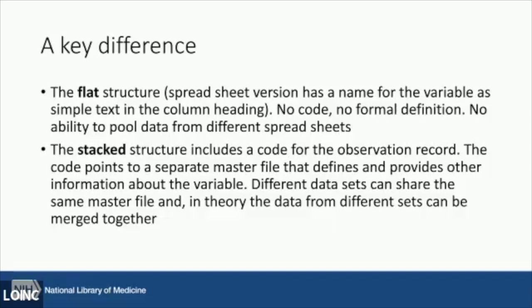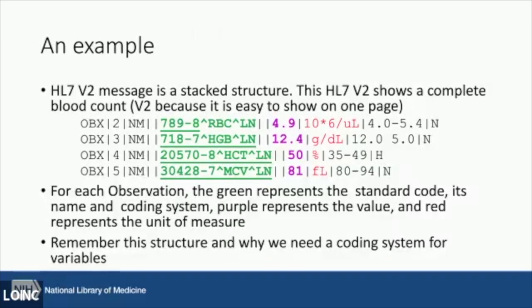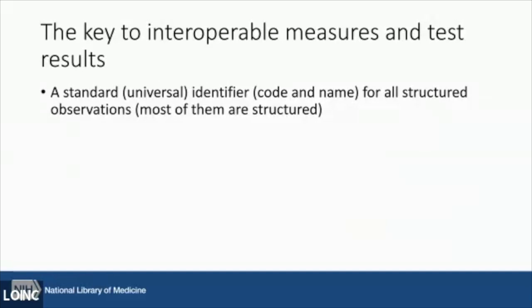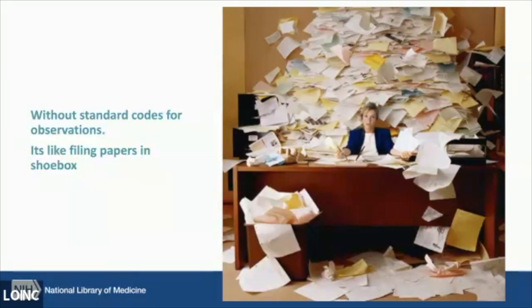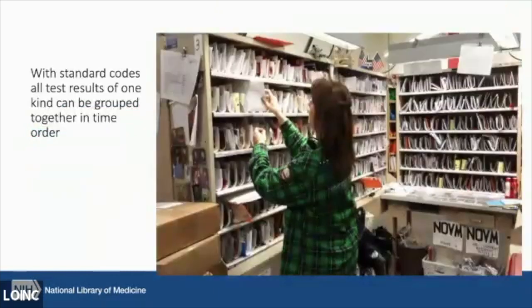HL7 V2 is a stack structure — one record per value, with a place in that record for the code, the value, the units of measure, etc. The key to interoperable measurements and test results is having a standard code for the structure of observations, because otherwise you don't know what's going on. Without standard codes for observations, it's like filing tables in a shoebox. Each kind of test can be grouped together in time order for a flow sheet or statistical aggregations.